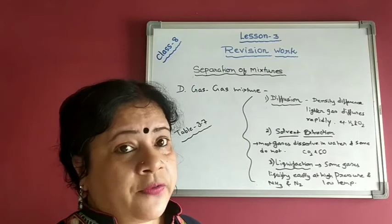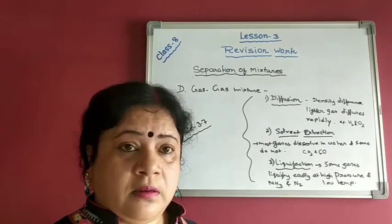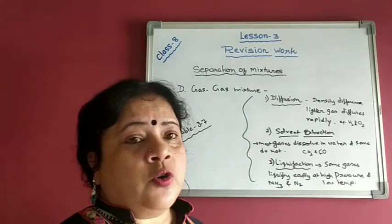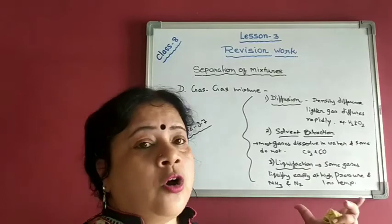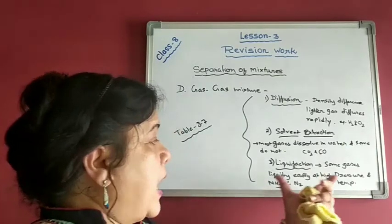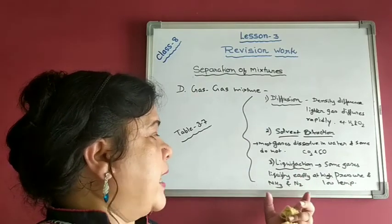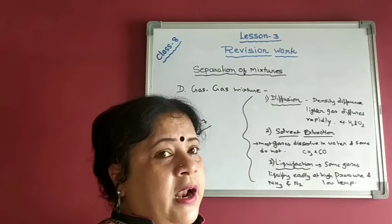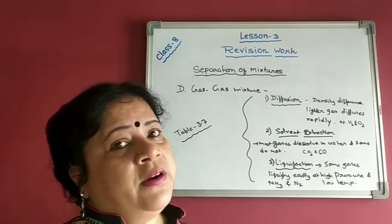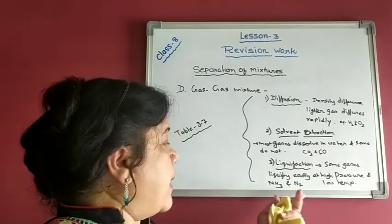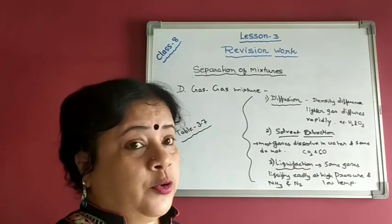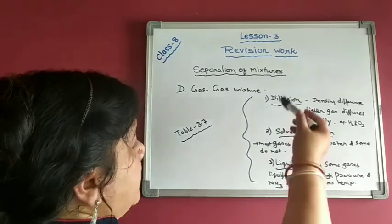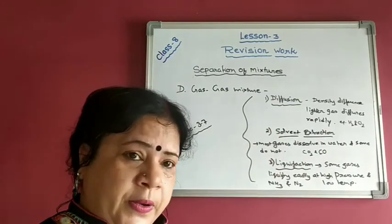The third process is liquefaction. Not all gases can be easily liquefied. Under high pressure and low temperature, gases that are highly soluble can easily be liquefied and will dissolve in water, while gases that are almost insoluble will remain as gas. In this way they can be separated. For example, ammonia and nitrogen can be separated since ammonia is highly soluble and is easily liquefied by this process.